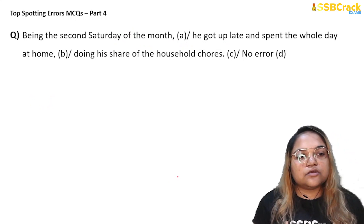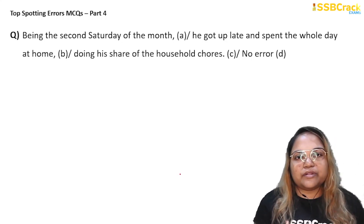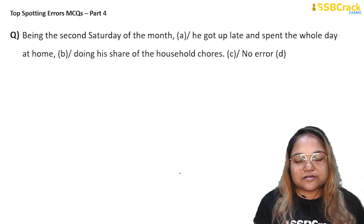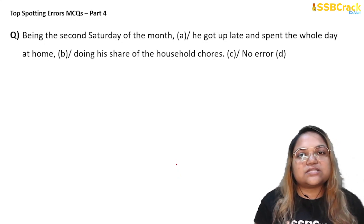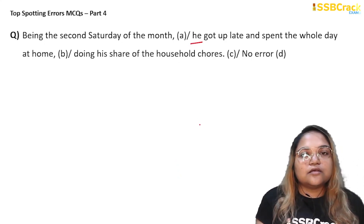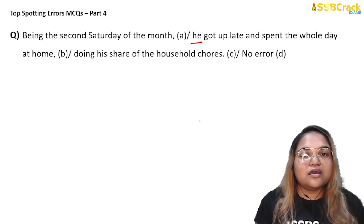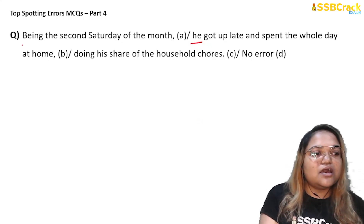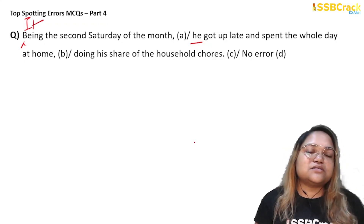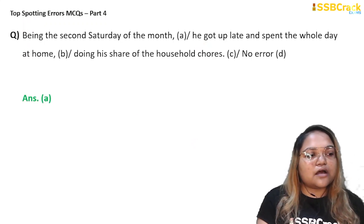Next question: 'Being the second Saturday of the month, he got up late and spent the whole day at home doing his share of household chores.' Again, the true subject problem arises. When a sentence starts with a verb+ing phrase and no subject is stated, the subject that follows is taken as the doer — meaning 'he' was the second Saturday of the month, which is impossible. We need to introduce the temporary subject 'it': 'It being the second Saturday of the month, he got up late.' Answer: option A.